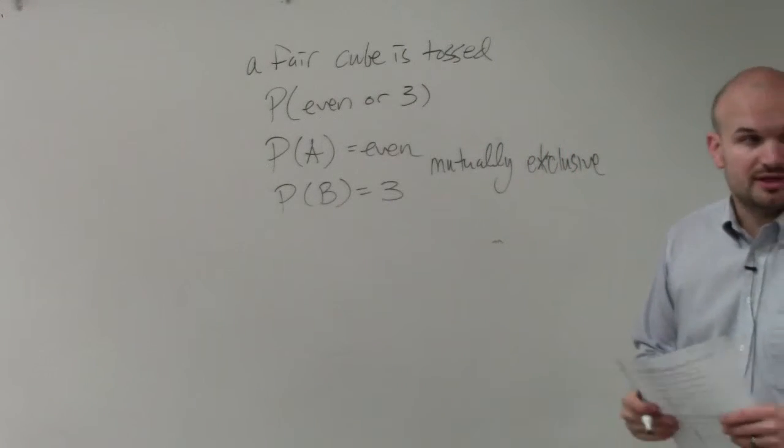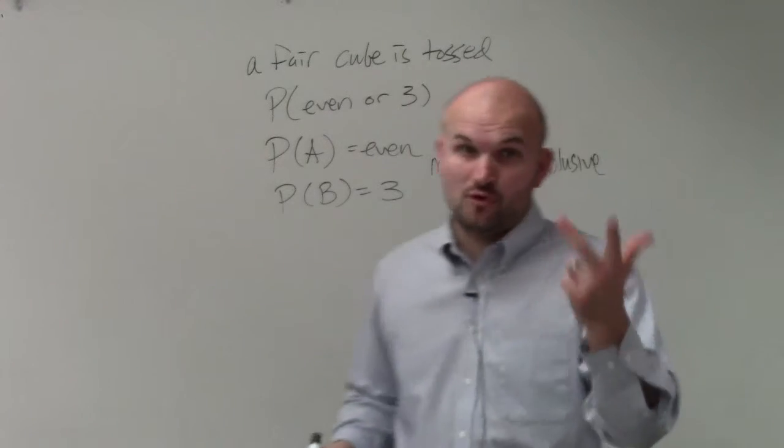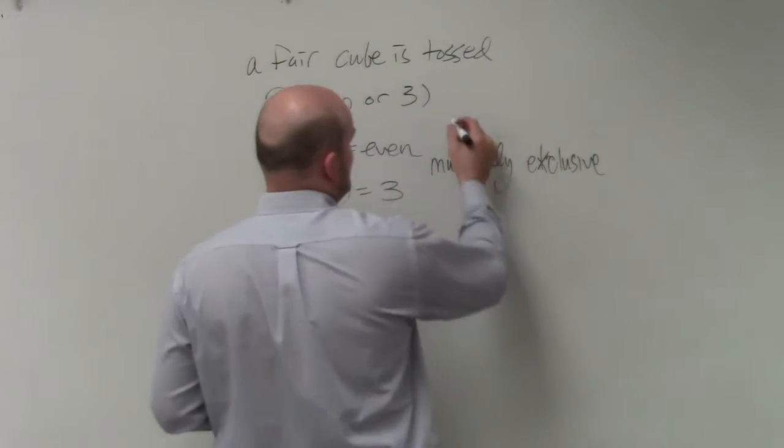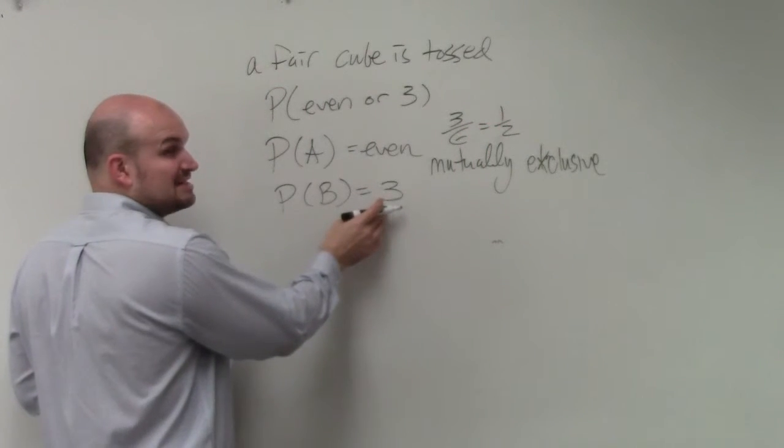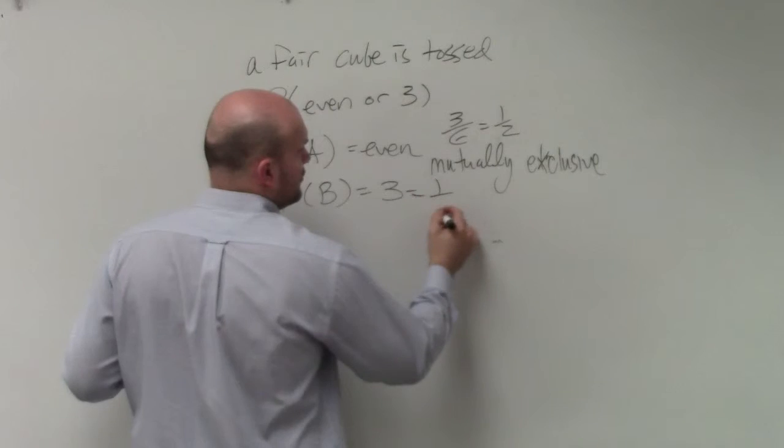So now we just need to find the probability. Out of a cube, there's 2, 4, 6. So that's 3 out of 6 numbers. The probability of that is 3 over 6, or 1 half. And rolling one specific number on a cube would be 1 over 6.